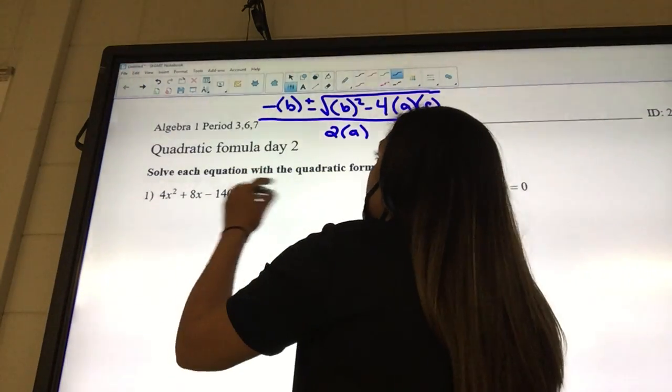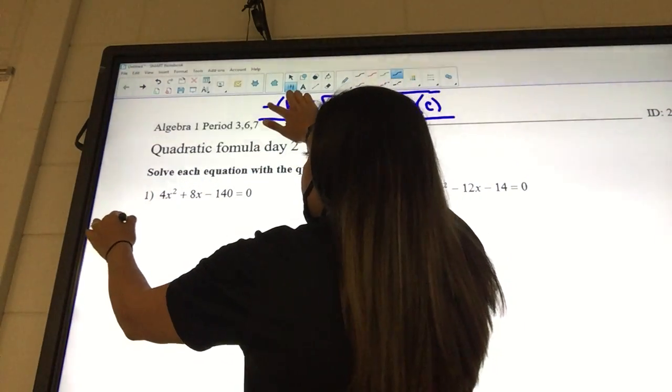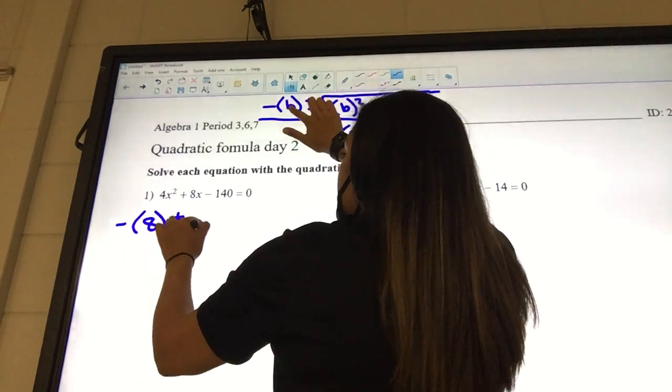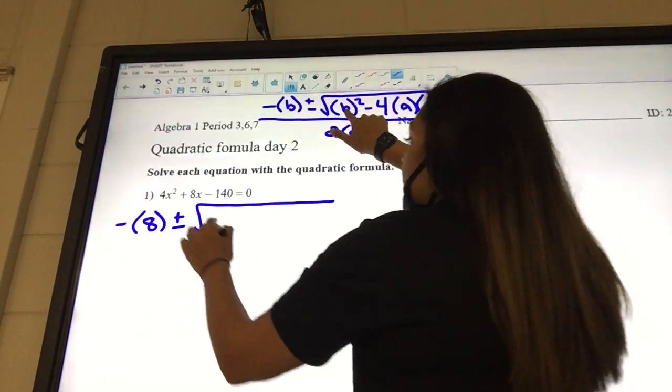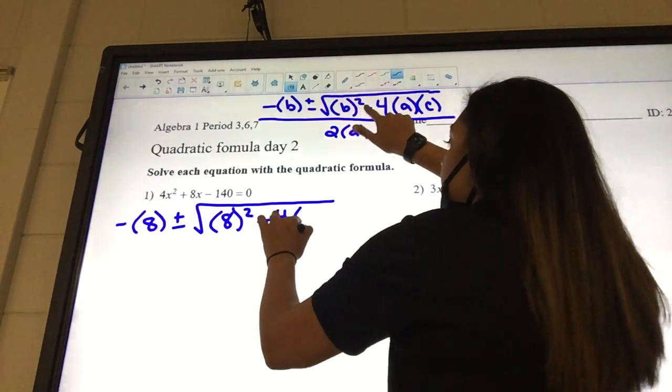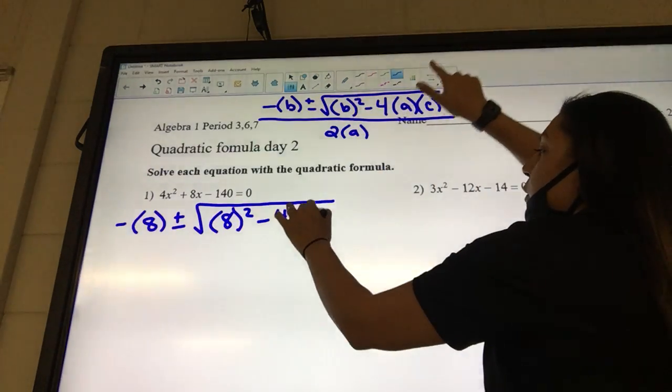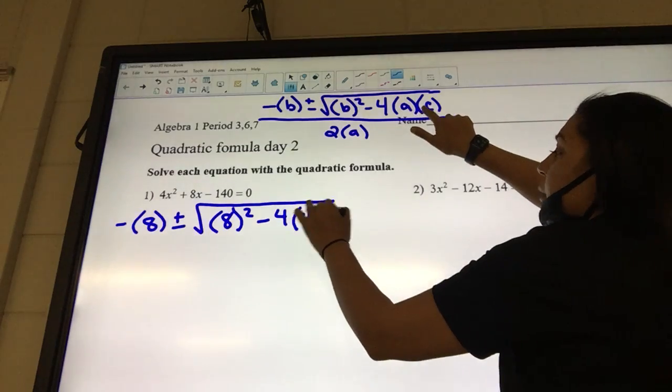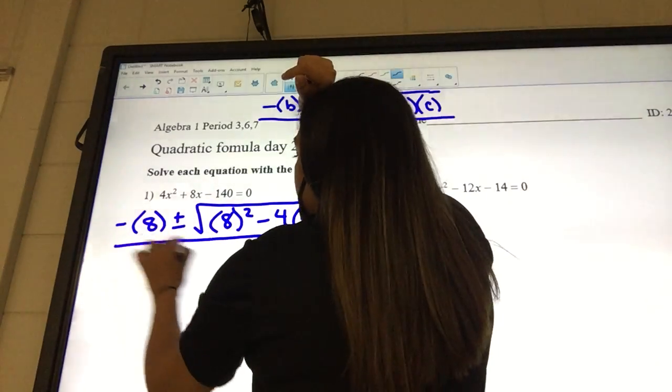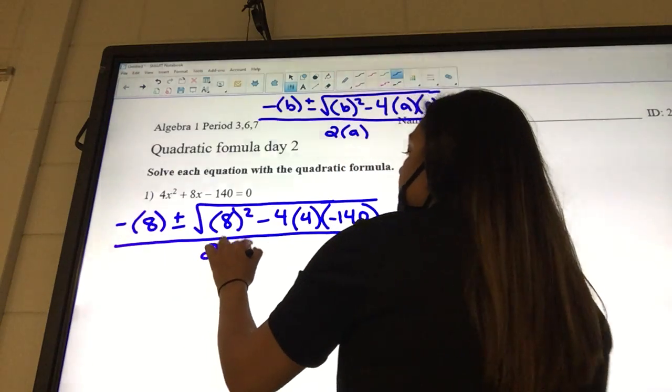So we plug and start plugging our stuff in our formula. So I got negative B is 8, B squared, so 8 squared minus 4 times our A which is 4, times our C which is negative 140, all over 2 times our A which is 4.